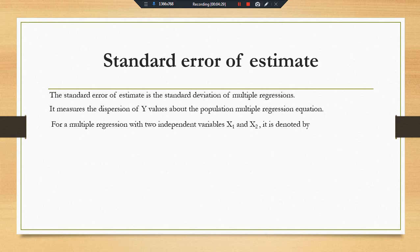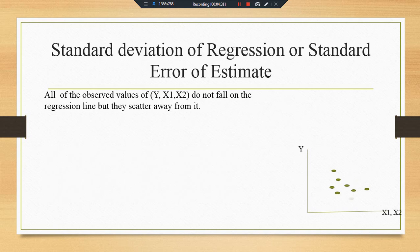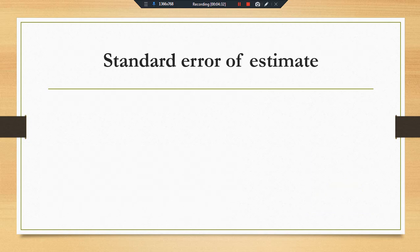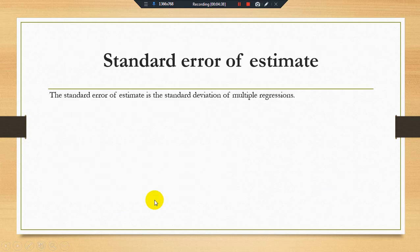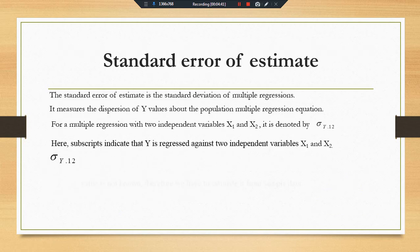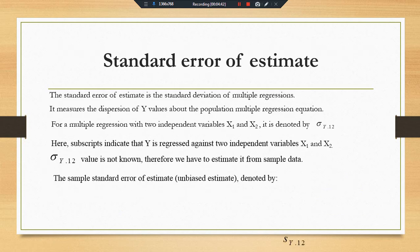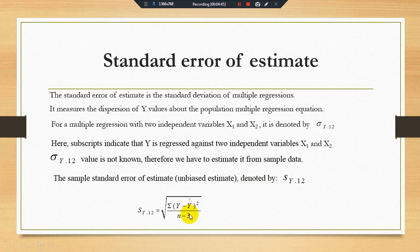See here — we have alpha, beta1 and beta2 as the three parameters. So in the formula, the minus 3 represents the number of parameters.